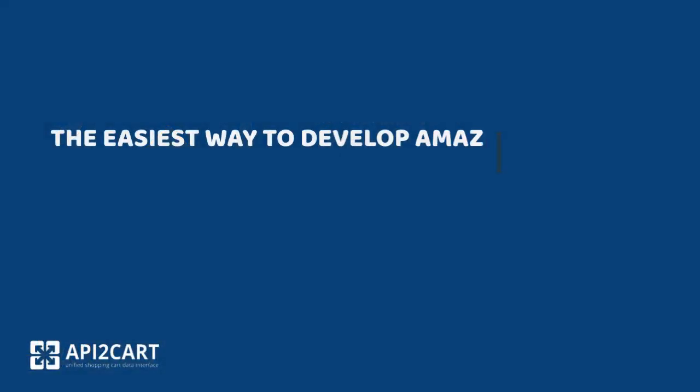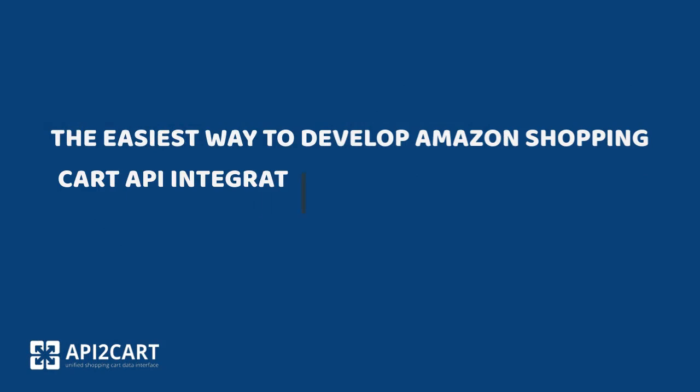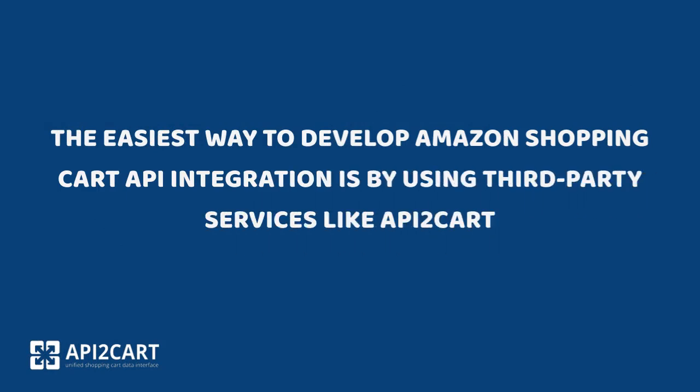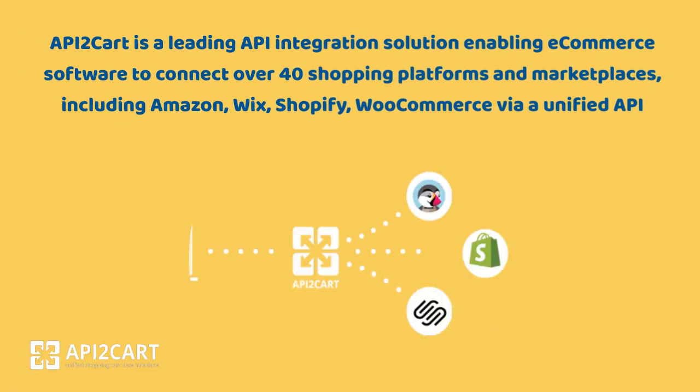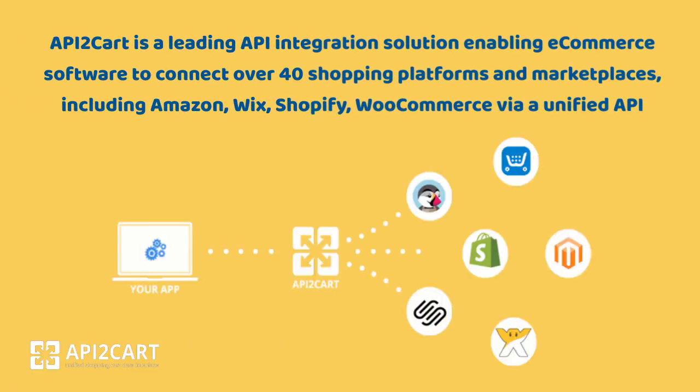The easiest way to develop Amazon Shopping Cart API integration is by using third-party services like API2Cart. API2Cart is a leading API integration solution enabling e-commerce software to connect over 40 shopping platforms and marketplaces, including Amazon, Wix, Shopify, and WooCommerce, via a unified API.